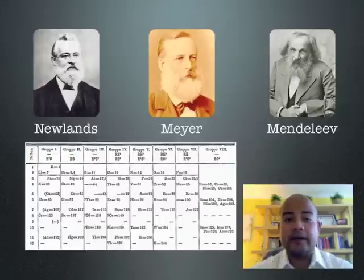In this lesson, we are going to answer the essential question: how did early scientists like Newlands, Meyer, and Mendeleev organize the elements if not all of them had been discovered during their time?